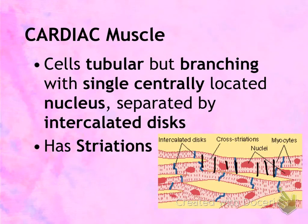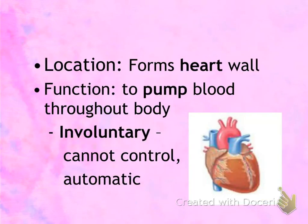The location of cardiac muscle is that it forms the wall of the heart — that is where it gets its name, as 'cardiac' refers to heart. The function of cardiac muscle tissue is to pump blood throughout the body. One more difference between skeletal and cardiac muscle is that cardiac muscle is involuntary, meaning you have no control over it — it is automatic.